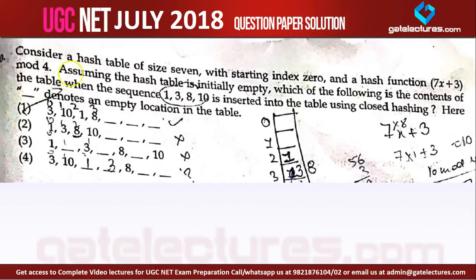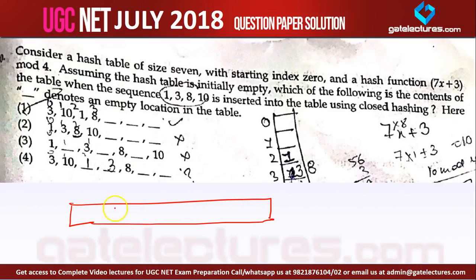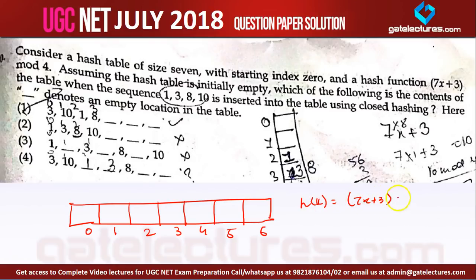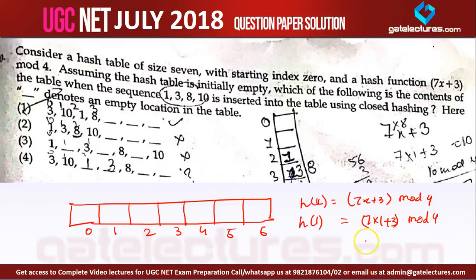Question 70: We have a hash table of size 7 (locations 0 to 6) and hash function h1(x) = (7x + 3) mod 4. Given values to insert. For x=1: (7×1+3) mod 4 = 10 mod 4 = 2. For x=3: (7×3+3) mod 4 = 24 mod 4 = 0, so 3 goes to location 0. For x=8: (7×8+3) mod 4 = 59 mod 4 = 3, so 8 goes to location 3. Wait — let me recalculate: 7×8=56, 56+3=59, 59 mod 4 = 3. And 7×3=21, 21+3=24, 24 mod 4 = 0.